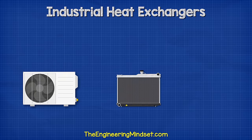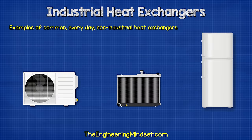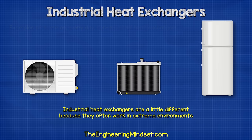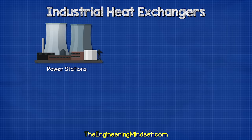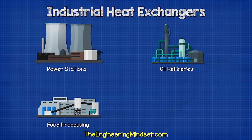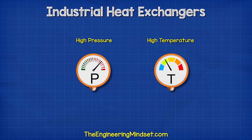We see heat exchangers used everywhere — from air conditioning units, engine cooling radiators in cars, and even on the back of refrigerators. However, industrial heat exchangers are a little different, because they often work in extreme environments such as nuclear power stations, oil refineries, food processing plants, and factories, which all involve working in high pressure and high temperatures.